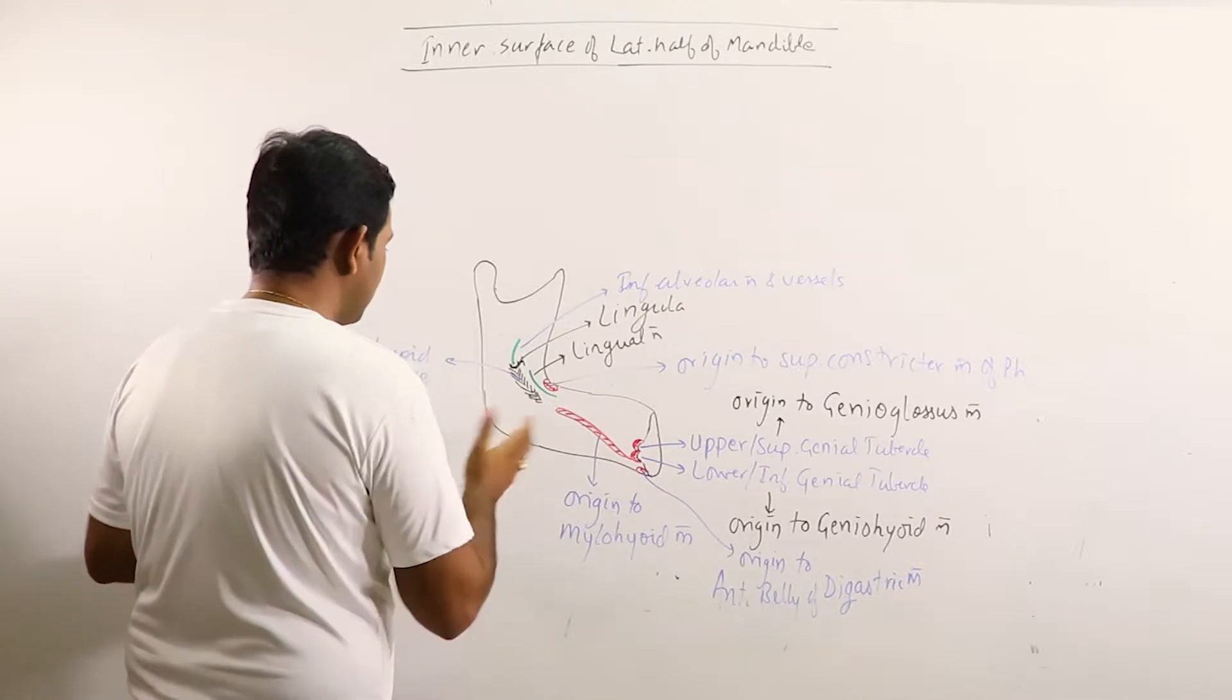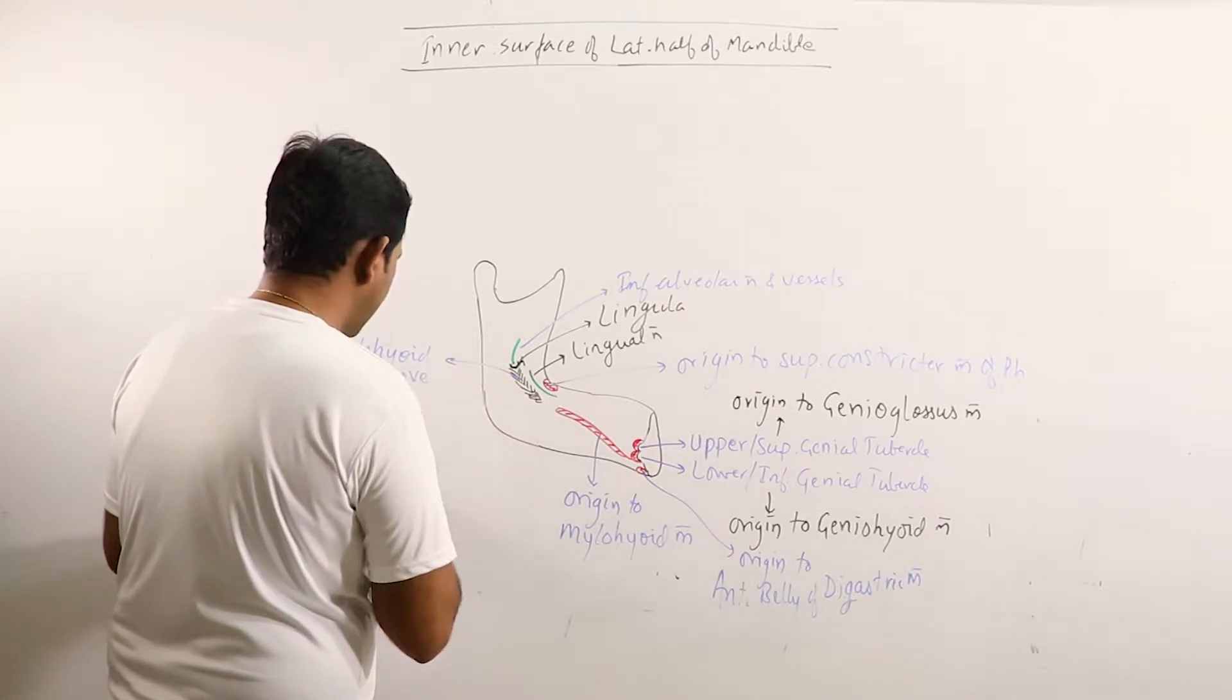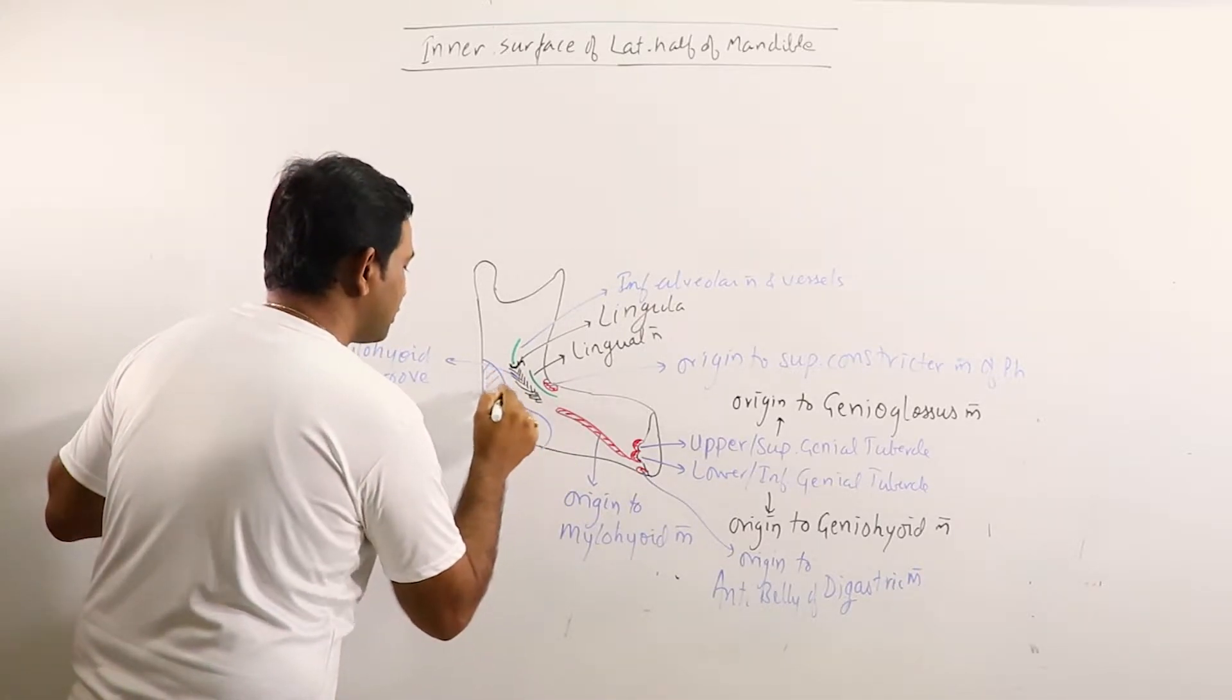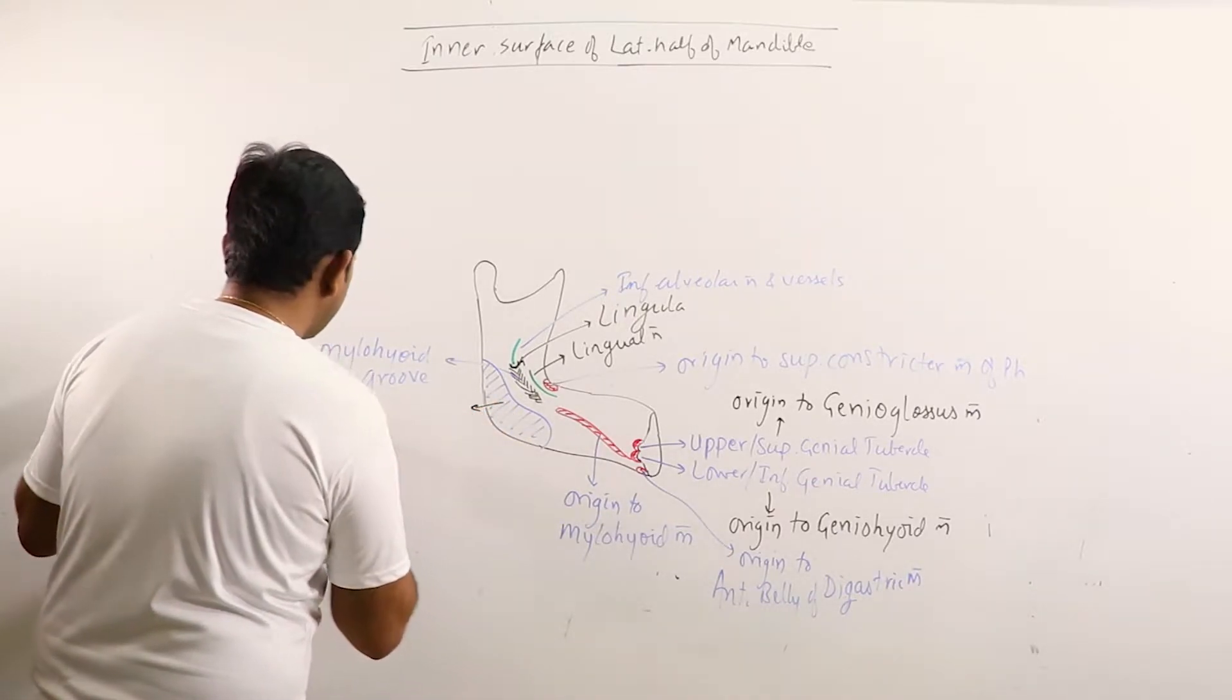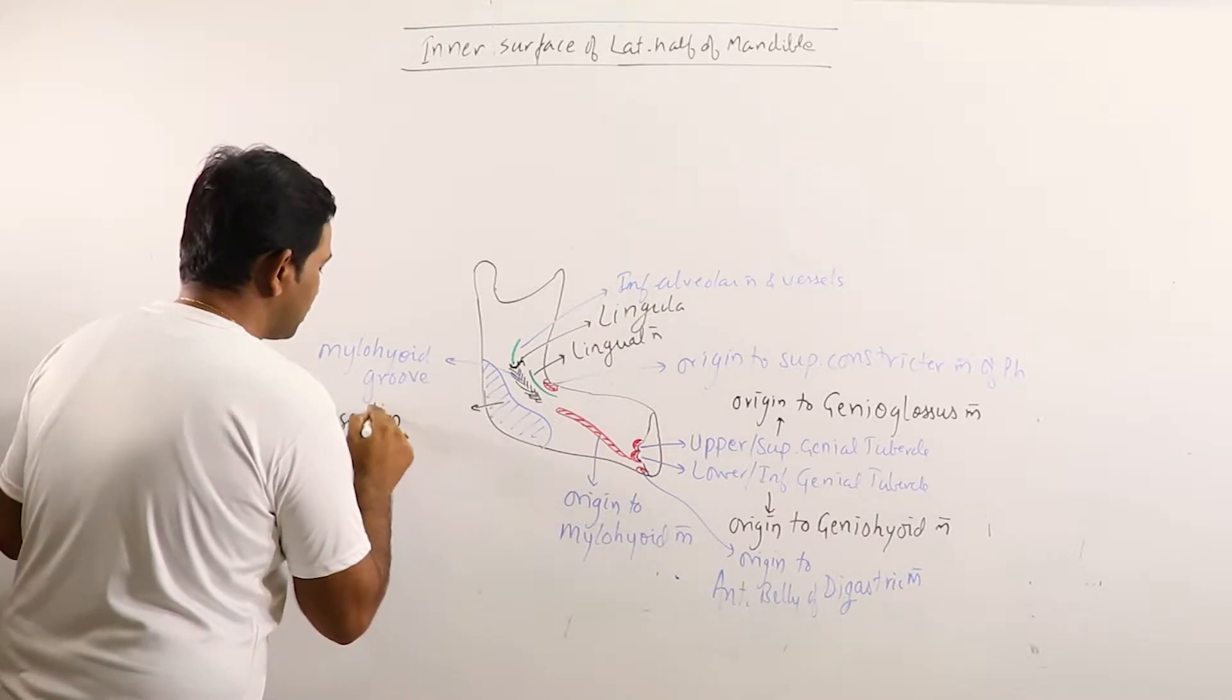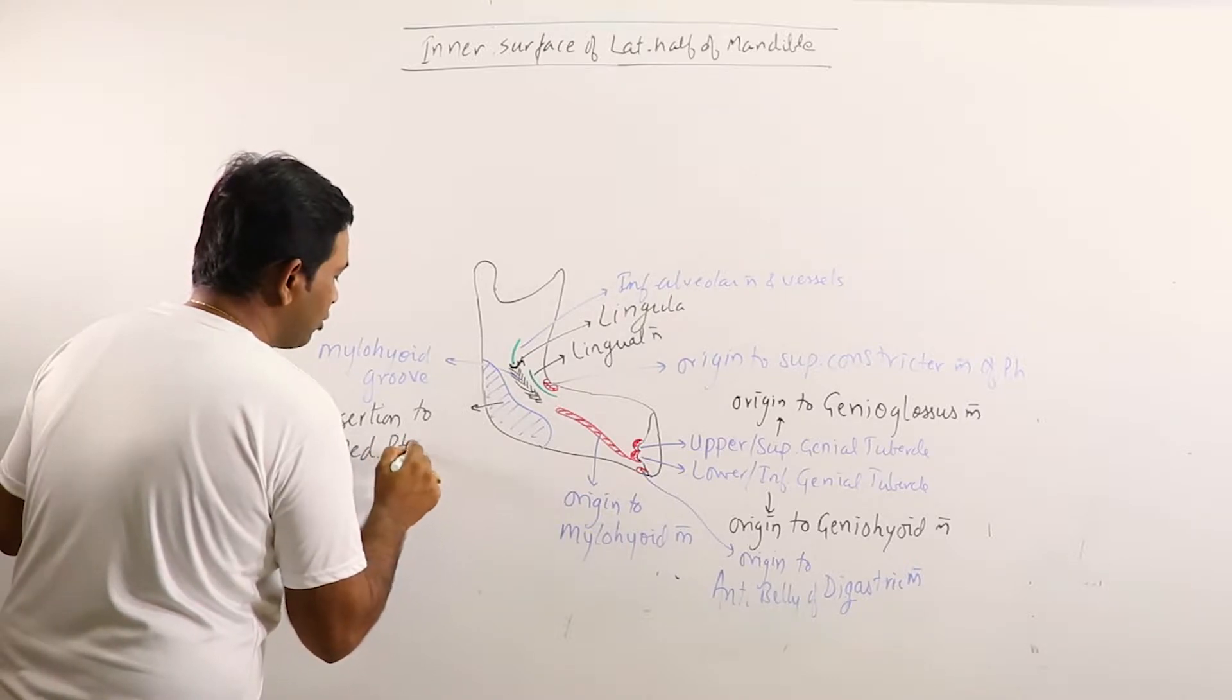Posterior to mylohyoid line, this region basically provides insertion to the medial pterygoid muscle.